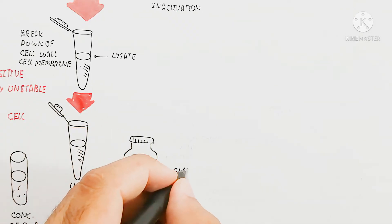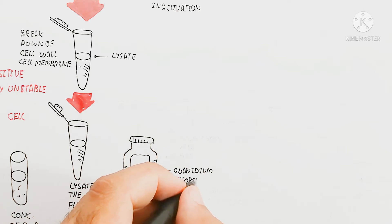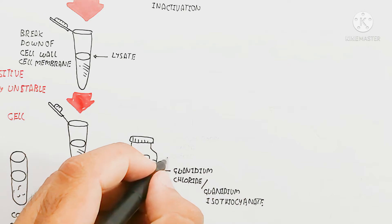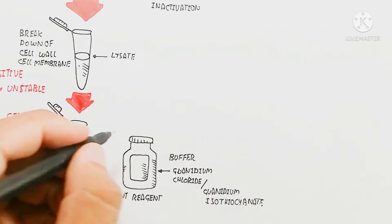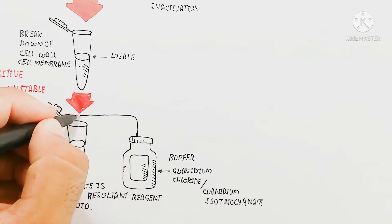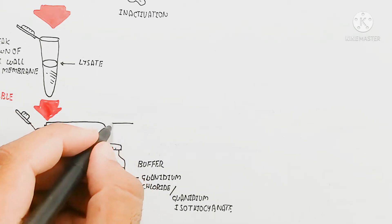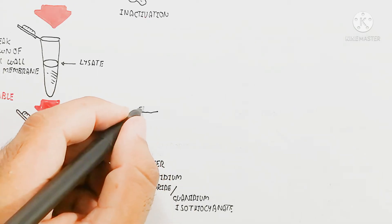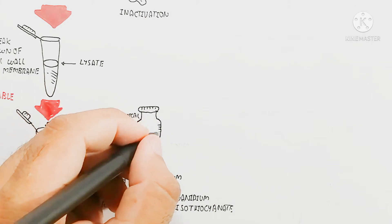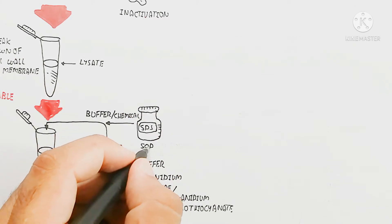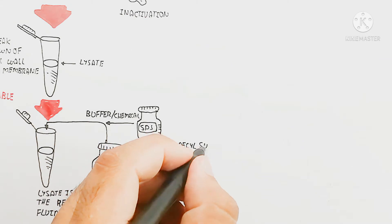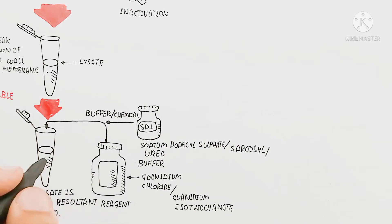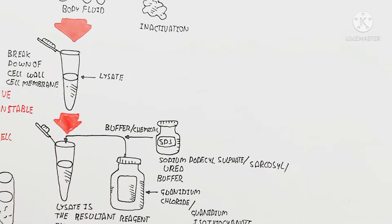To the lysate we add a buffer or chemical such as sodium dodecyl sulfate (SDS), sarcosyl, or urea. Additionally, guanidinium chloride or guanidinium isothiocyanate is added. These reagents in the lysate fluid protect against the breakdown of RNA.